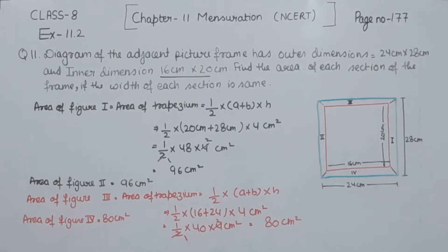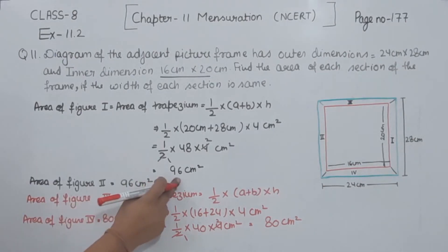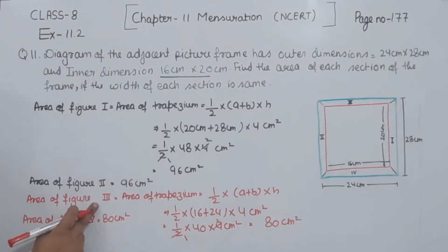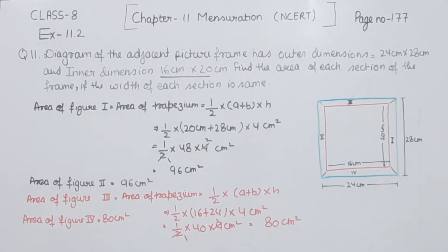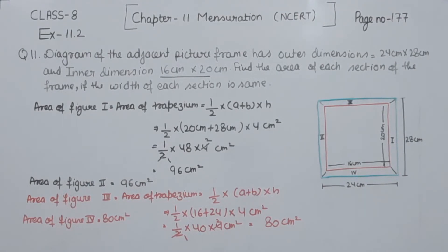So we have the areas of all 4 figures: the area of figure 1 is 96 cm², figure 2 is also 96 cm², figure 3 is 80 cm², and figure 4 is also 80 cm². With this, we have completed question number 11 of exercise 11.2. In the next video, we are going to start with exercise 11.3.